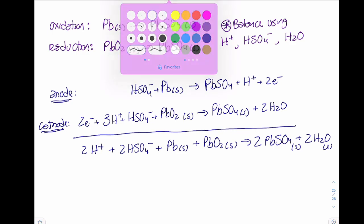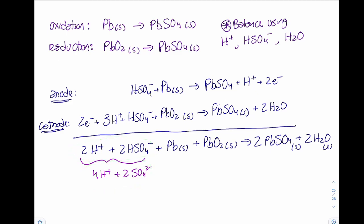Sometimes this equation is written with 4H⁺ and 2SO₄²⁻ instead of 2HSO₄⁻, because bisulfate can lose a proton. Depending on the pH of the solution it may be completely dissociated. Both forms are acceptable ways to write this equation.